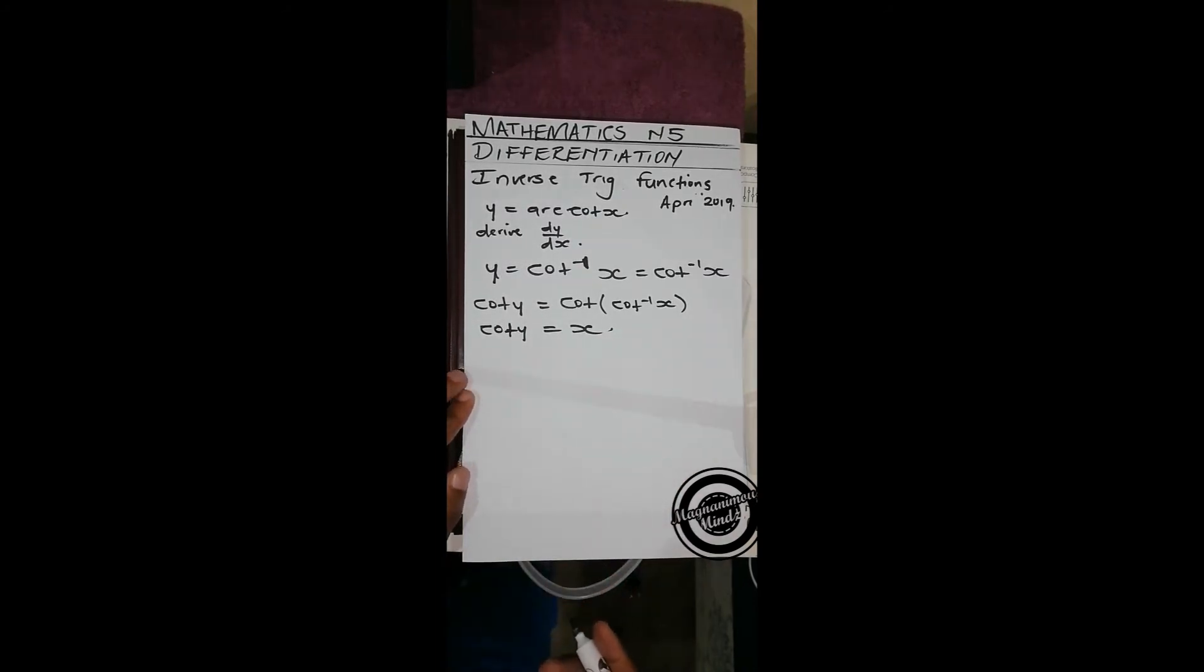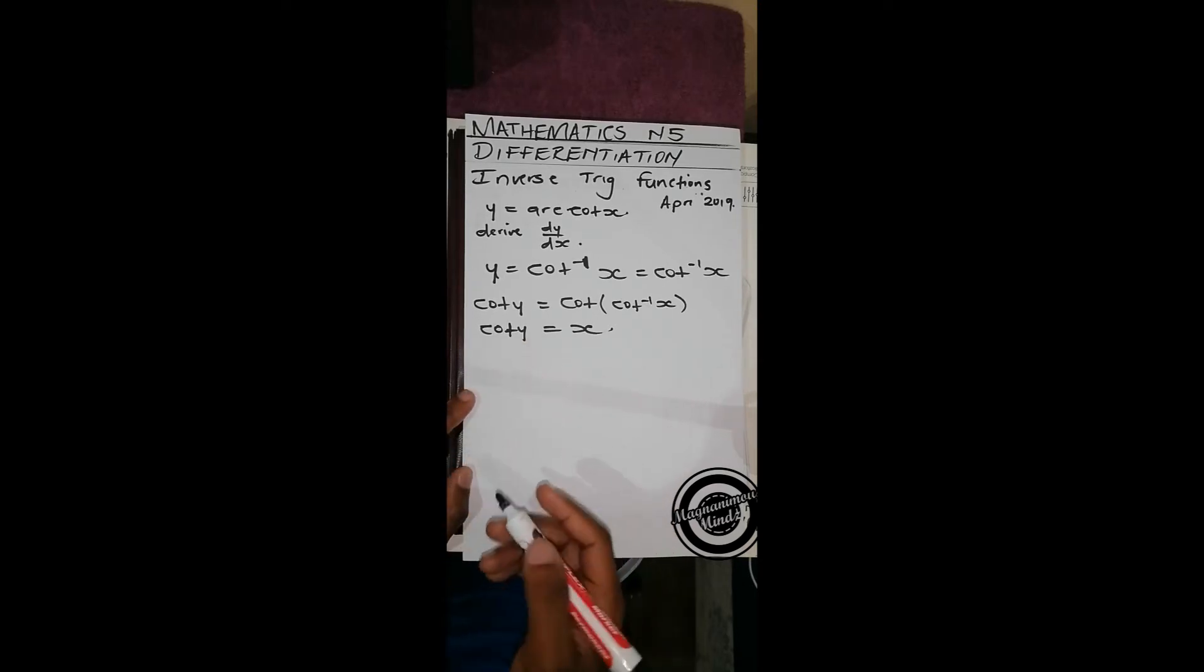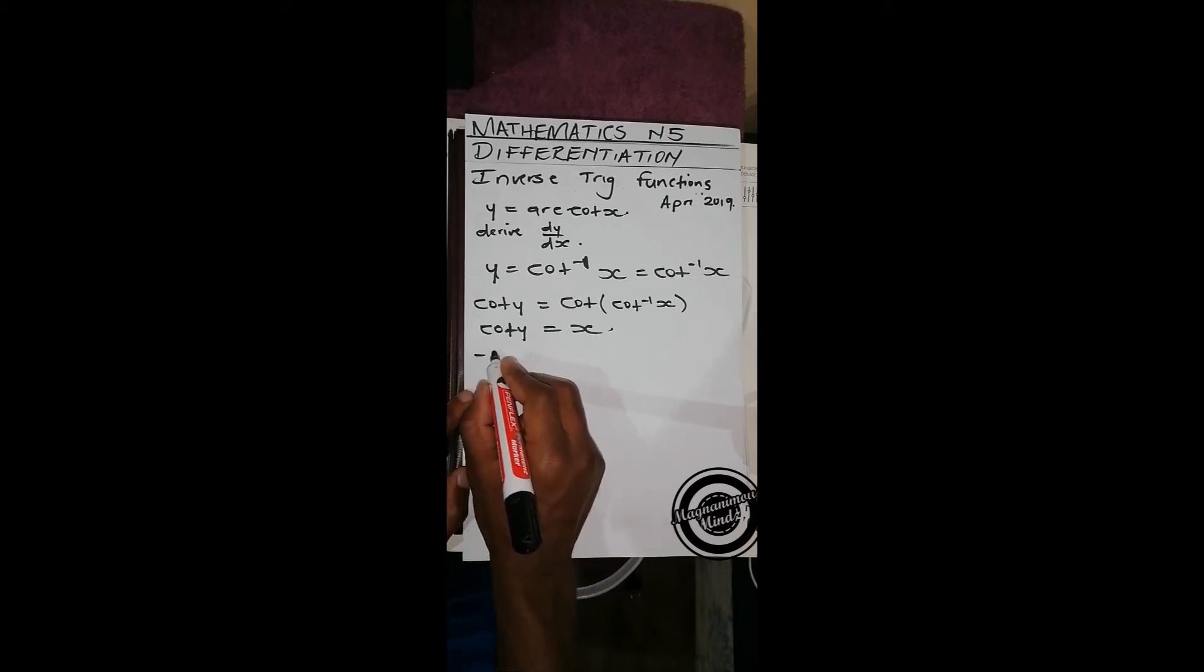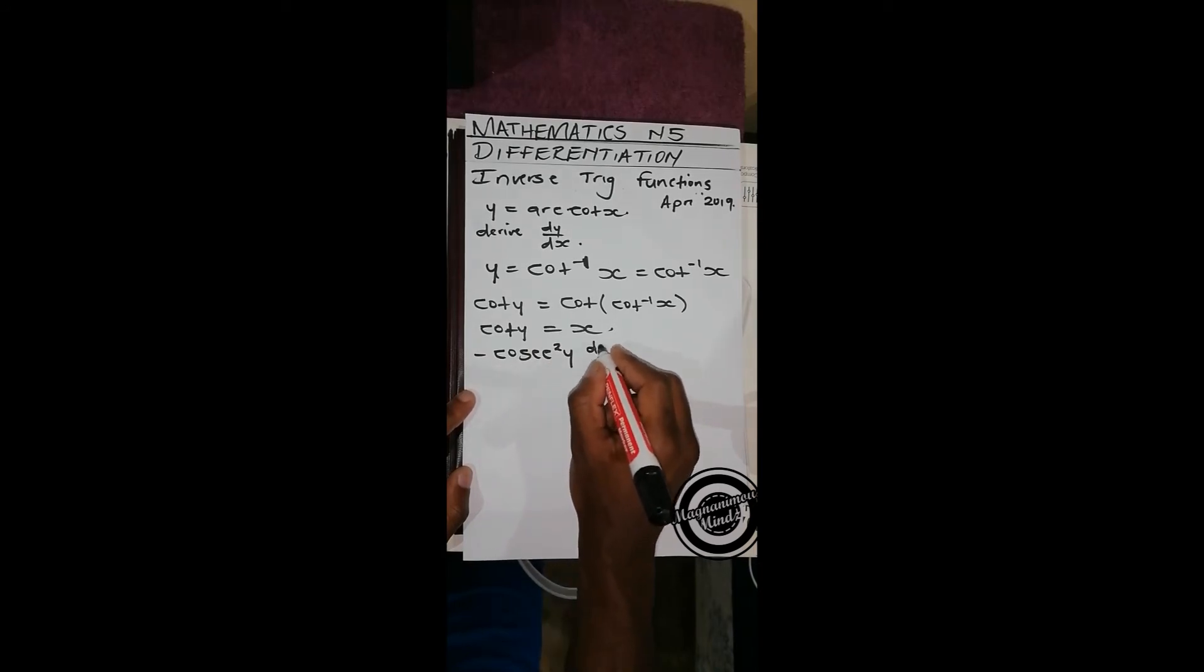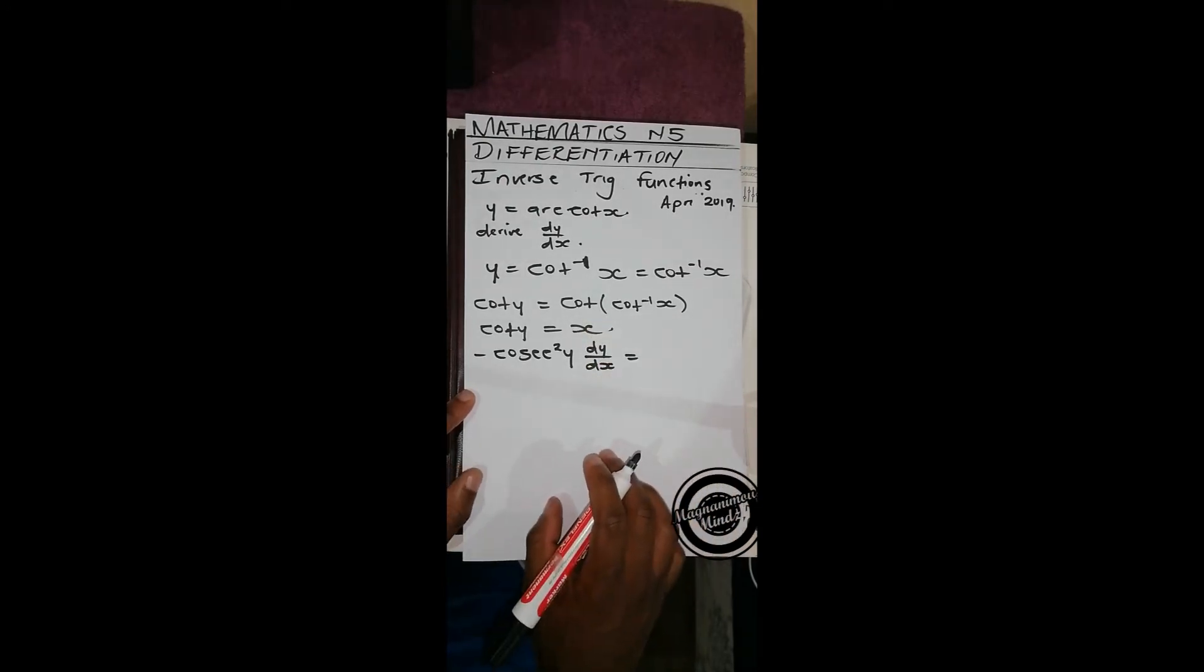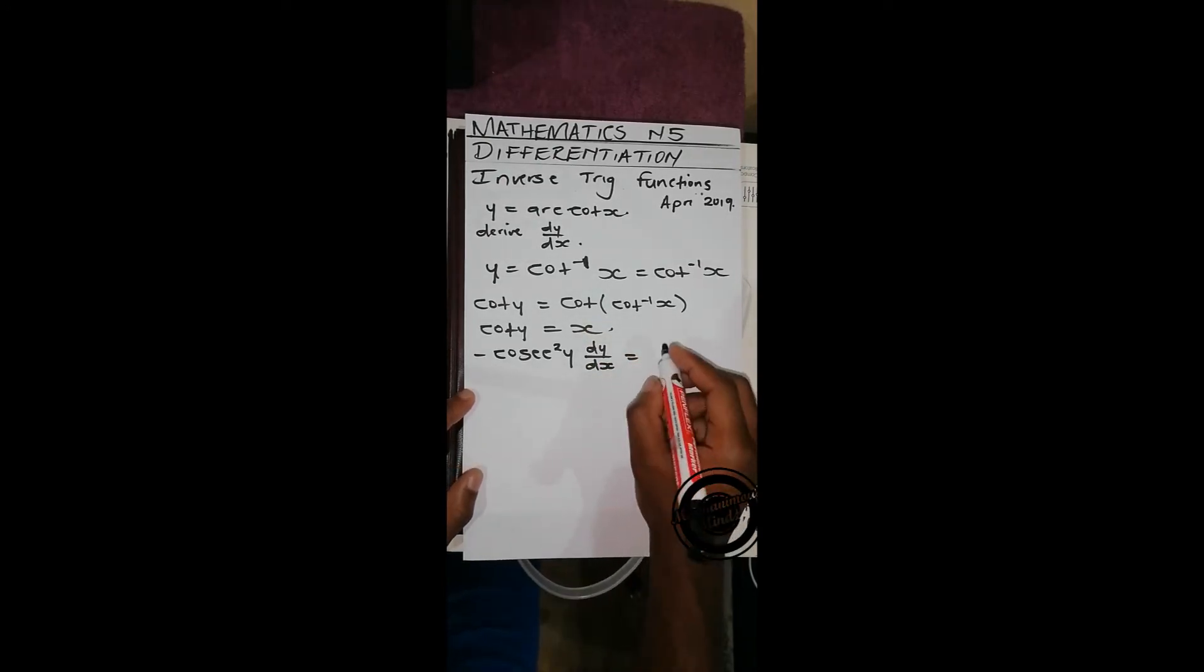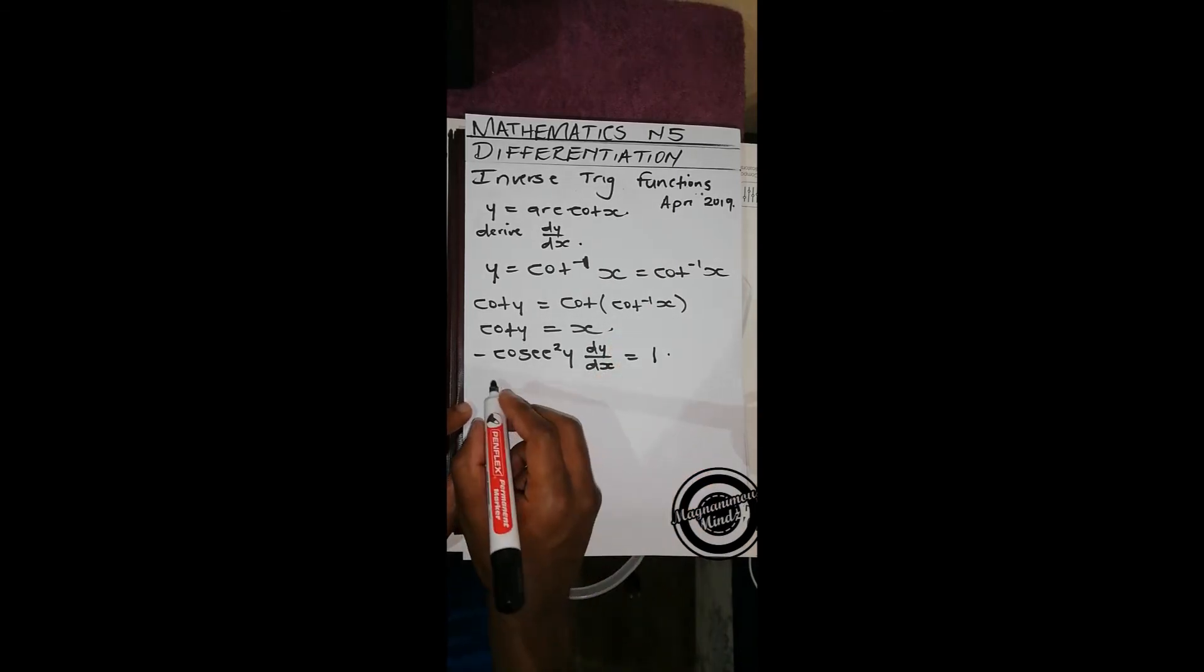Then from there we do what we call implicit differentiation, that's differentiating a function with both x and y. So when we do that, if we differentiate cot y in terms of dy over dx, we will get negative cosec squared y dy over dx equals 1. Making dy over dx subject of the formula, dy over dx equals negative 1 over cosec squared y.